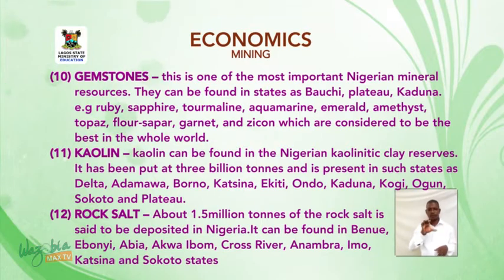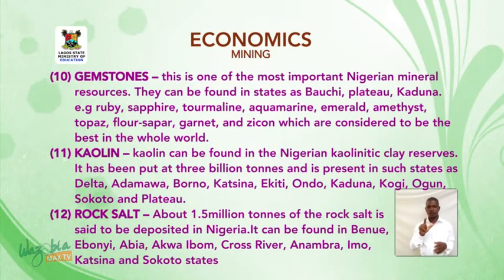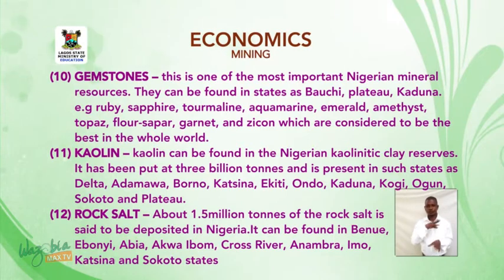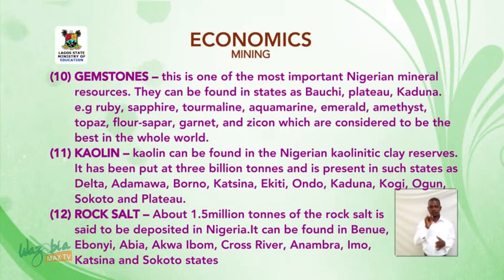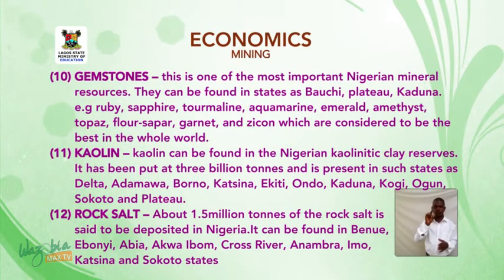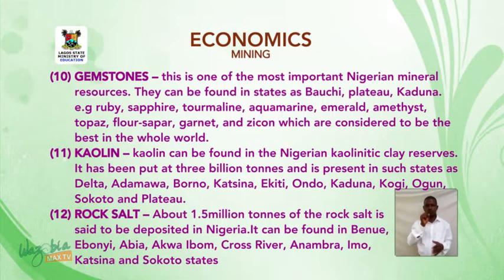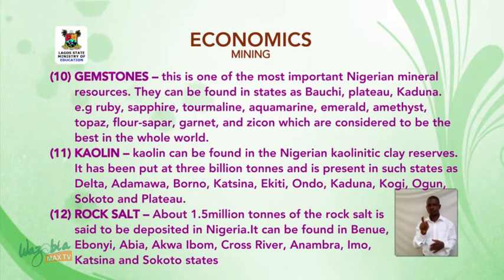Kaolin — kaolin can be found in the Nigerian kaolinitic clay reserves. It has been put at 3 billion tons and is present in such states as Jigawa, Adamawa, Borno, Katsina, Ekiti, Ondo, Kaduna, Kogi, Ogun, Sokoto and Plateau state.